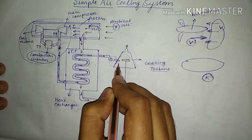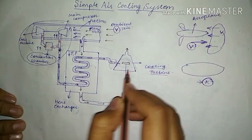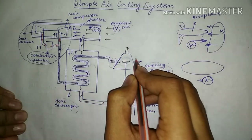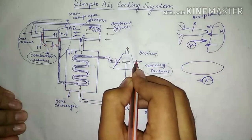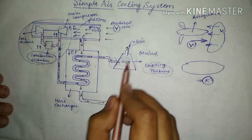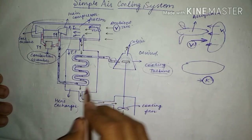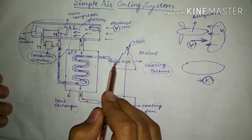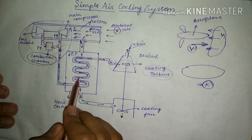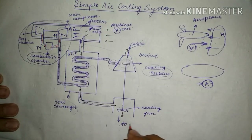If we are unable to reach the required cabin temperature K after the heat exchanger, we use the cooling turbine. The cooling turbine further reduces the temperature to the desired level K. This desired cool temperature is then fed into the cabin of the aeroplane. The hot air that exchanged heat is sent to the atmosphere through the cooling fan.